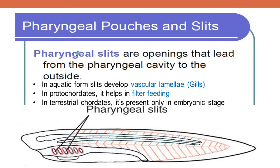In aquatic forms, these pharyngeal slits will develop vascular lamellae — page-like tissues filled with blood vessels — and they act as gills which receive oxygen from the surrounding water. The oxygen is diffused into the blood vessels in the lamellae. But in some protochordates — that means subphylum Urochordata and subphylum Cephalochordata — pharyngeal slits help in filter feeding. The food along with water is taken in, water is passed outside through the slits, and food passes into the intestine. That's why it is referred to as filter feeding — it filters the water out and takes the food in.